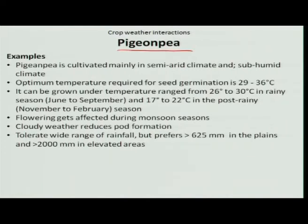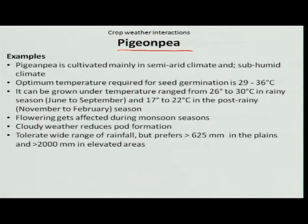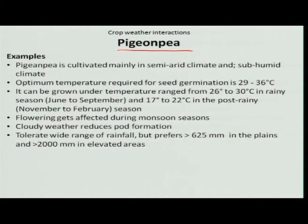Let us see the crop-weather interaction for pigeonpea (PGNP). It is one of the important crops that supplements protein to human beings and can be cultivated during the kharif and rabi season. It is a C3 plant based on photosynthesis and a quantitative short day plant based on photoperiod — meaning a critical photoperiod is required for flowering, above which flowering does not occur. The optimum temperature required for seed germination is 29 to 36 degree Celsius; if the temperature goes below 9 degree Celsius, it will adversely affect seedling emergence.